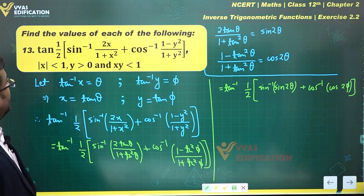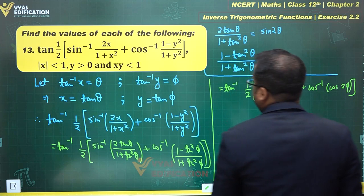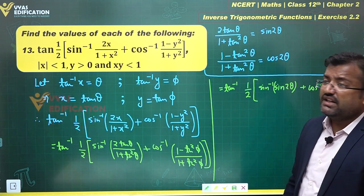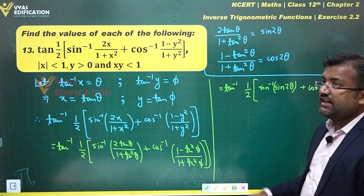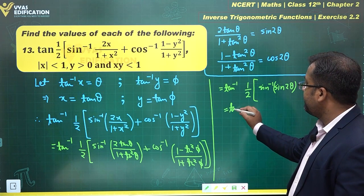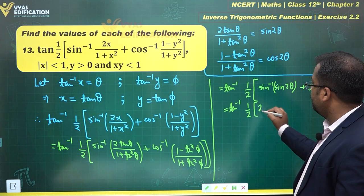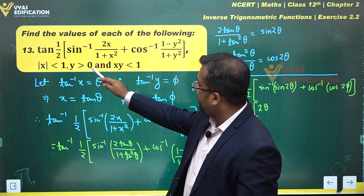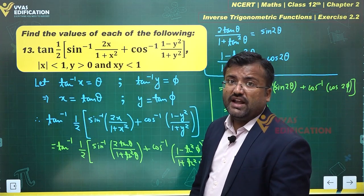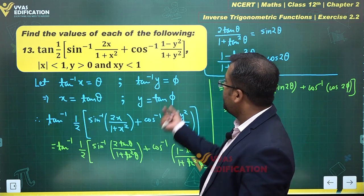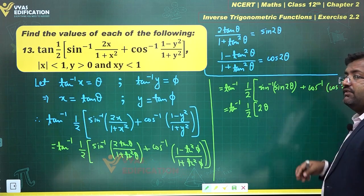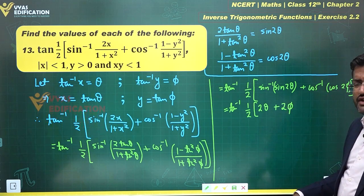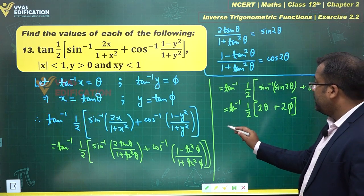Now we use the given conditions. Since mod x < 1, tan inverse x = θ lies in (-π/4, π/4), so 2θ lies in (-π/2, π/2), and sin inverse sin2θ = 2θ simply. For y > 0, tan inverse y = φ lies in (0, π/2), so 2φ lies in (0, π), and cos inverse cos2φ = 2φ, since the output lies in [0, π].